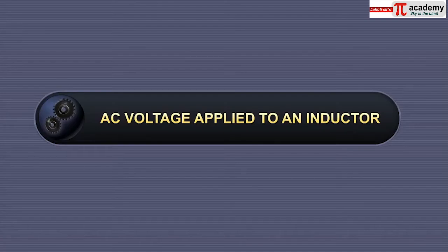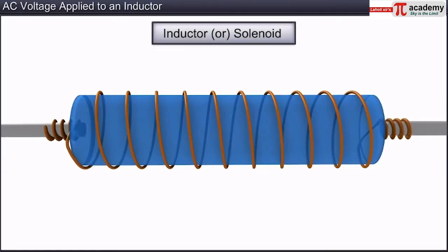In this module, you will learn about an inductor and the properties of AC current applied to an inductor. An inductor or a solenoid is an electrical component that can store energy in the magnetic field created by a varying current flowing through it. It is typically a wire wound around a ferrite core.